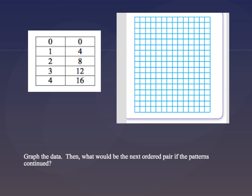Alright, so we are going to graph this data and then after we graph the data we're going to figure out what the next ordered pair would be if the pattern continued. So pause the video. I want you to write out the ordered pair and then replay the video to see if your answers are correct.